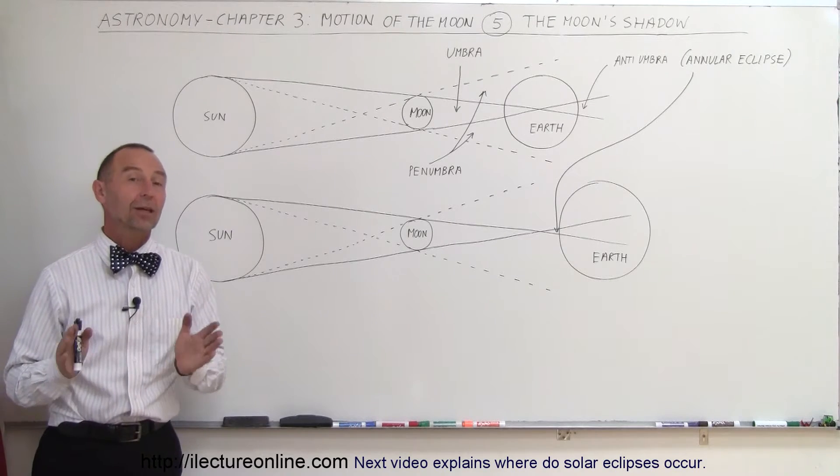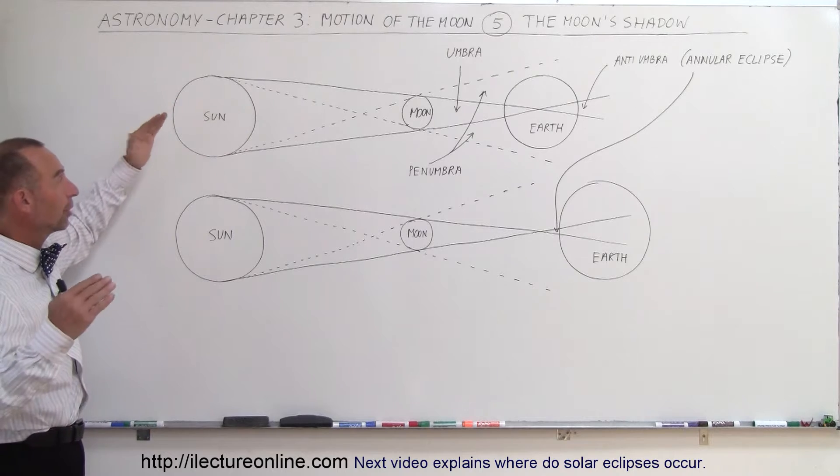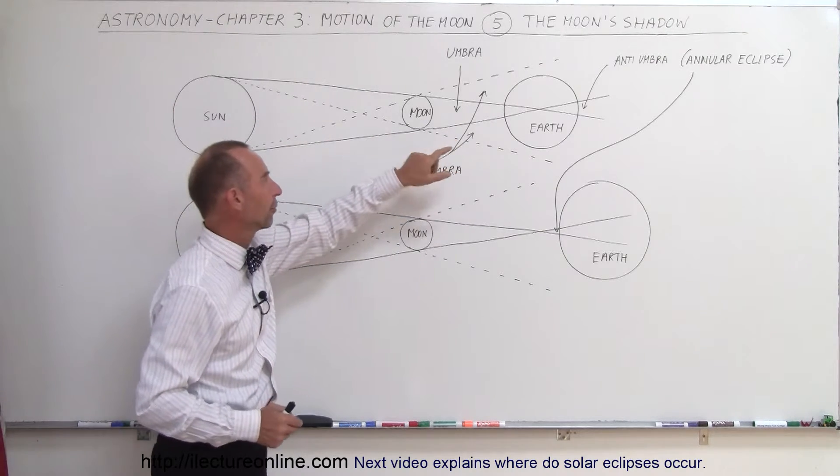Welcome to ElectronLine and now let's take a closer look at the moon's shadow. So here's the sun, very large. Here we have the moon, not too far from the earth.